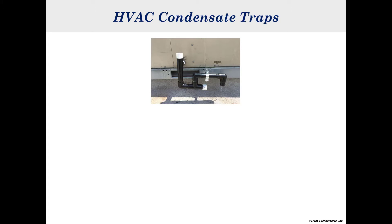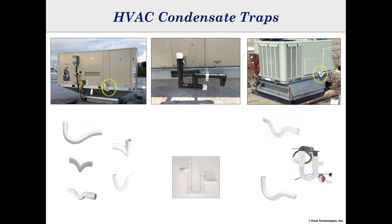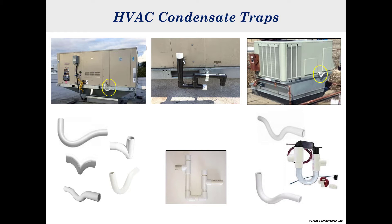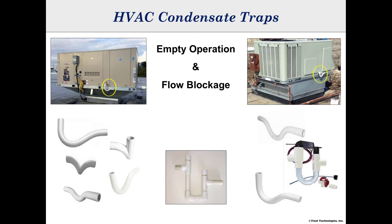Condensate traps for HVAC drain systems in all shapes and sizes are available from supply houses and field fabricators with little or no knowledge of pressure conditions and condensate flow rates. This chart shows some of the types of traps available. Some are more prone to failure than others, but all, including the best possible geometry, are subject to failure as a result of frequent empty operation or flow blockage.